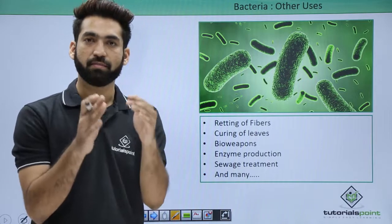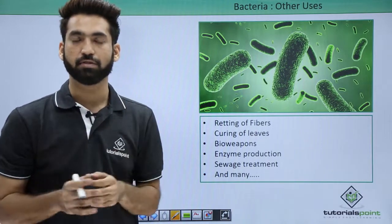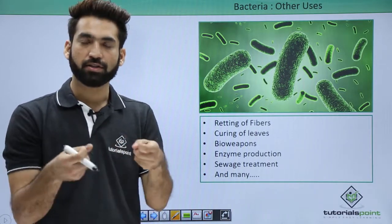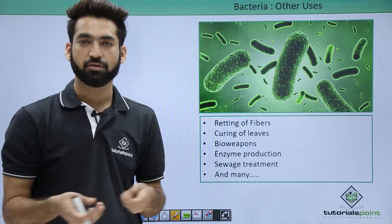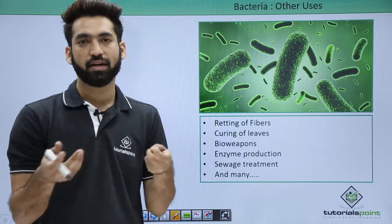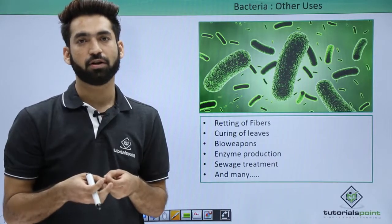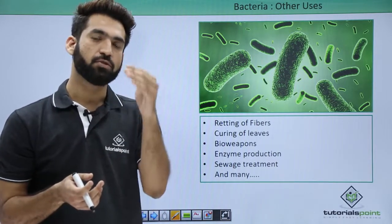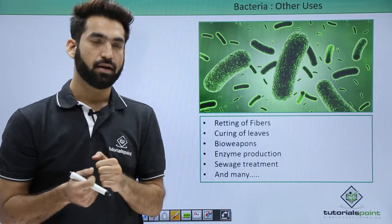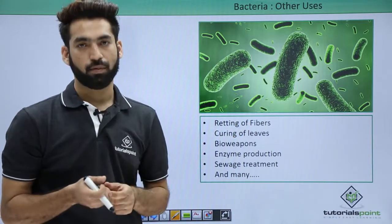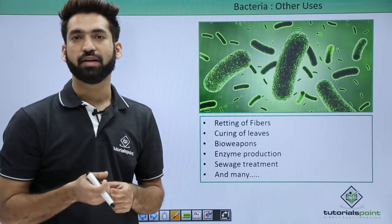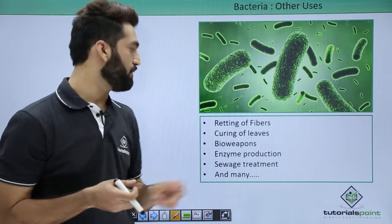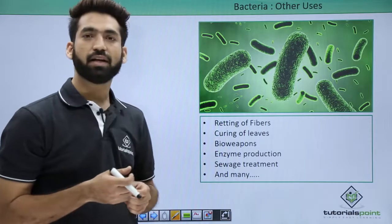There are more uses of bacteria, like retting of fiber. For jute fibers — used in the production of jute bags and related items — the fibers need to be retted, and this is done with the help of bacteria. Clostridium is the bacteria used for the retting of fibers.